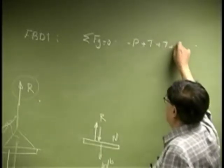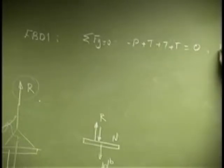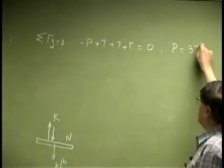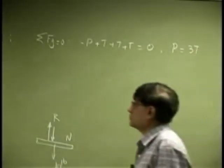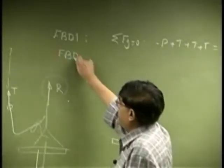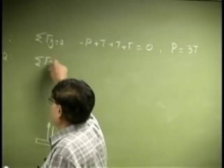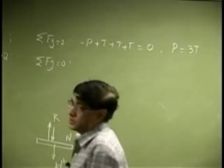And that should give us P going down, this negative, plus T plus T plus T that all adds up to 0. So that gives us P as 3 times T. Then we look at free body diagram number 2.